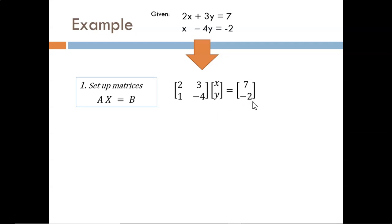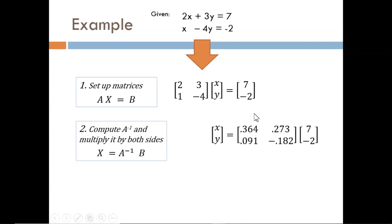Next, we compute the inverse of A, which is this matrix here. We'll let the computer do the grunt work of the calculations for now. Multiplying by the inverse of A cancels out A on the left side. Then, once we multiply it by B, we are left with this vector. This tells us that X equals 2, and Y equals 1.